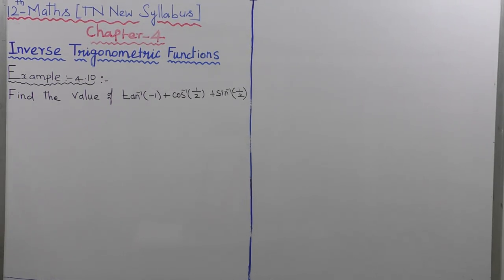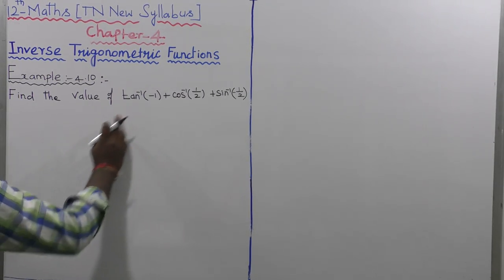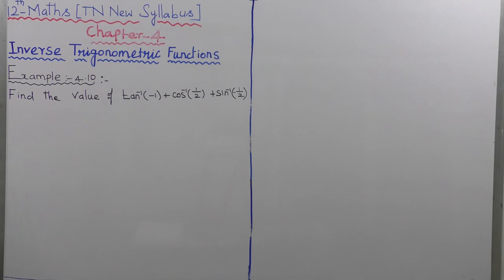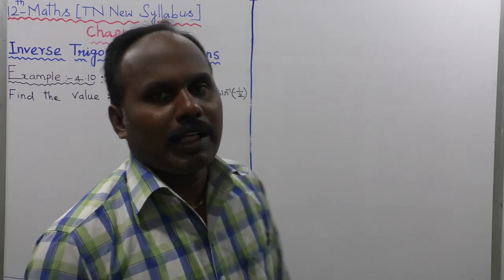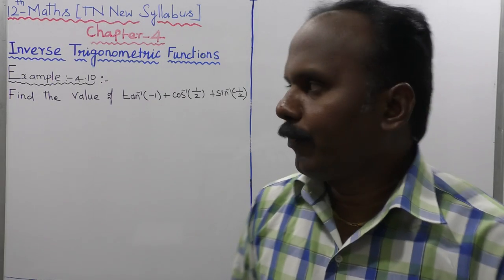Example 4.10: Find the value of tan inverse of minus 1, plus cos inverse of 1 by 2, plus sin inverse of minus 1 by 2.